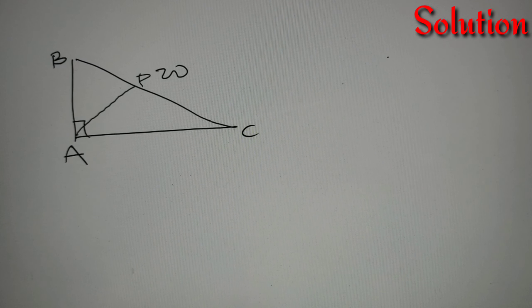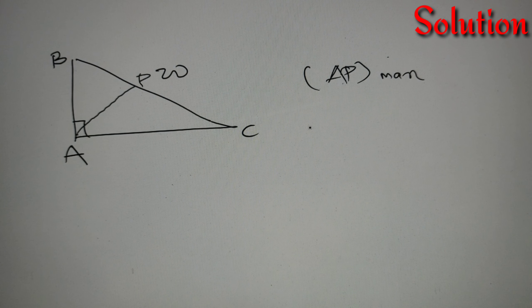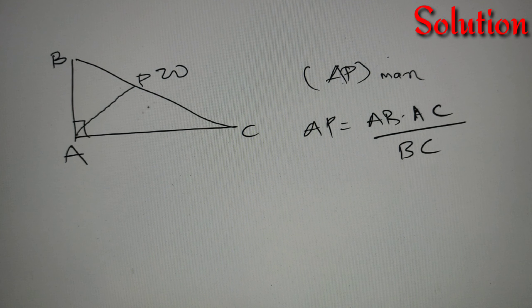In order to find the maximum value of AP, we can use a formula which says that AP equals AB times AC divided by BC, where AB is the perpendicular, AC is the base, and BC is the hypotenuse of the main right-angled triangle.